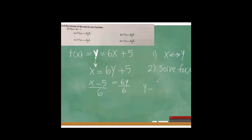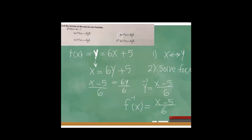That gives y equals (x minus 5) over 6. So the inverse function f inverse of x equals (x minus 5) over 6. Looking at the choices, (x minus 5) over 6 matches option B, which is the correct choice.